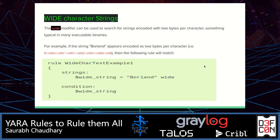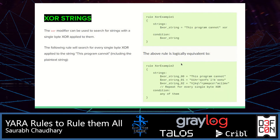Wide character strings are a computer character data type that generally has a greater size than the traditional 8-bit characters, allowing for the use of larger coded character sets. For XOR strings, there are two ways to write them. Adding 'xor' beside the string you've written is equivalent to writing out all XOR permutations explicitly. Remember: for an efficient rule, write small and write logically for better and long-term detections.